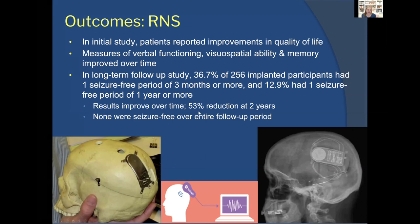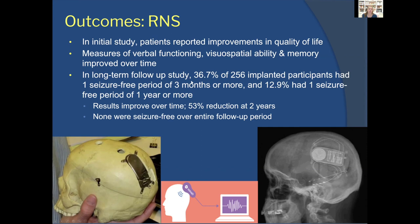RNS results also improve over time: after about two years, more than 50 percent of patients achieve greater than 50 percent seizure reduction. In the pivotal study, 13 percent of patients had a seizure-free period of one year or more — which represents a huge improvement in quality of life for patients who were previously seizing daily or several times a week. While not a cure for most patients, some achieve prolonged seizure freedom and others experience significant seizure reduction.